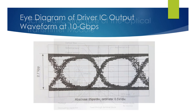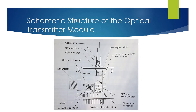This figure shows the top-view structure of the optical transmitter module. This module encloses a DFB laser with modulator, the driver IC, a photodiode for power monitoring, a thermistor, a thermoelectric cooler to stabilize internal temperature, a terminating resistor, an optical coupling lens, and an optical isolator.